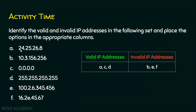A is a valid IP address because it has four octets — one, two, three, and four — and each octet is between 0 and 255. B is not a valid IP address. Though it has four octets, the fourth octet is invalid because any octet should be between 0 and 255, and 256 is not a valid entry. So B is invalid.